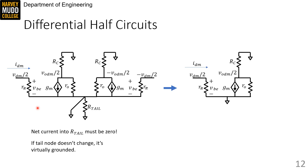Our half-circuit looks like this. We've copied over all the element values: gm stays gm, rπ stays rπ, and all of the node voltages. This node is vdm/2 and so is this one. We know the right side of the circuit will do exactly the same thing because it's identical — the only difference is that the input is negative instead of positive. This half-circuit is obviously a common emitter, so analyzing it should be pretty quick.